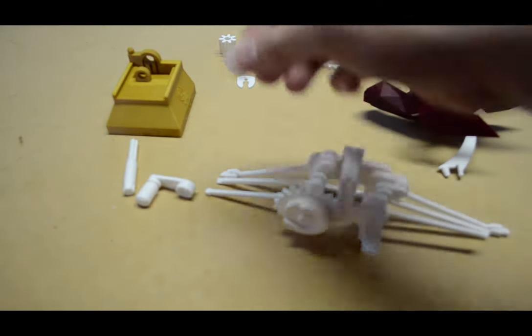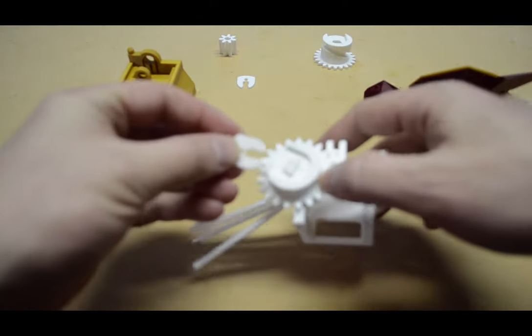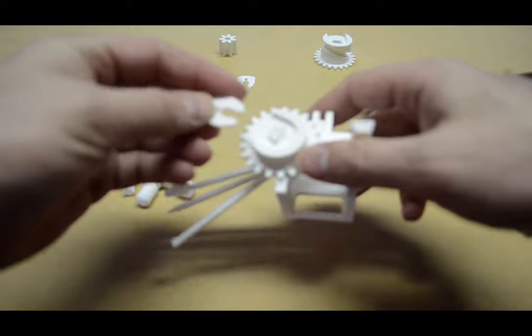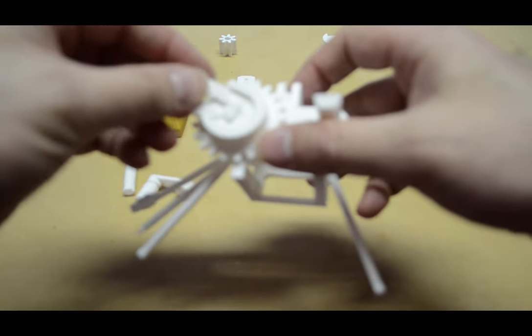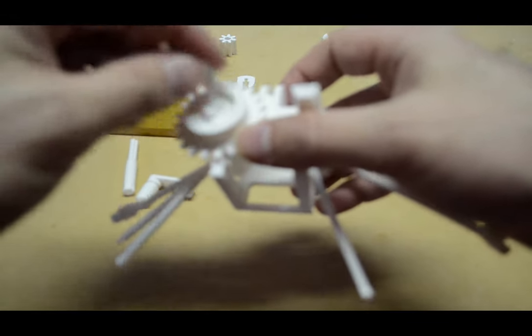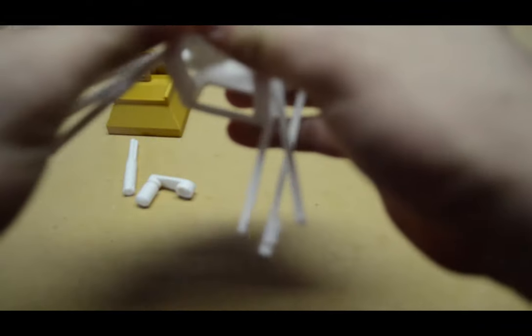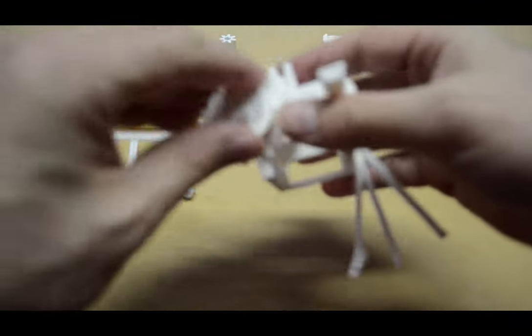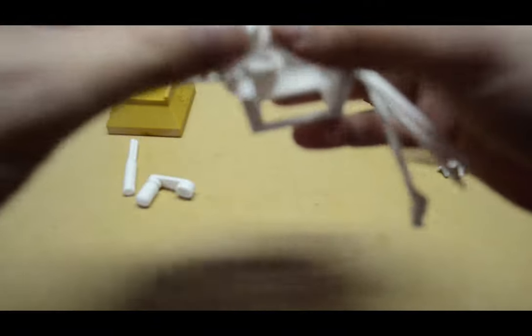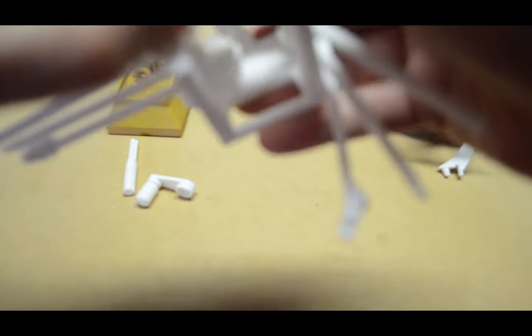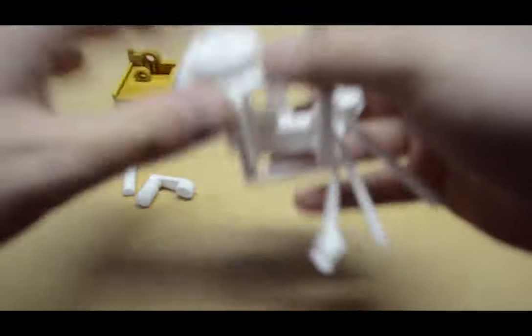Turn that over. All right. So now that should make the gear system move. And then the next thing we're going to do is bring this piece on here. This is going to hold the gear in place so it doesn't pop off. So that should slide over here. There we go. That's nice and tight.